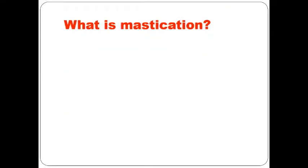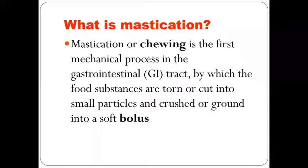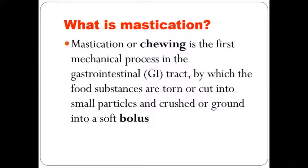Mastication is the other term for chewing — the first mechanical process in the gastrointestinal tract by which food substances are torn, cut into small particles, and crushed or ground into a soft bolus. When food is placed in the oral cavity, this chewing process — mechanical digestion — breaks down food particles so the bolus can easily be formed and swallowed.